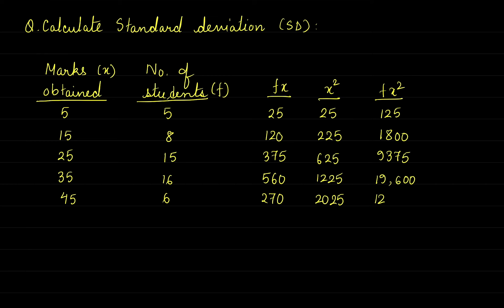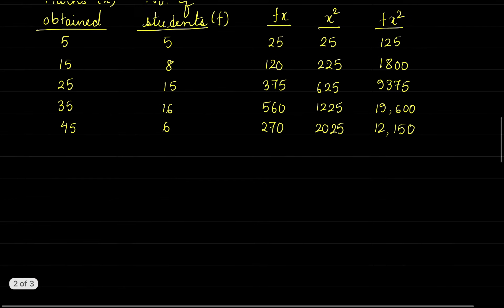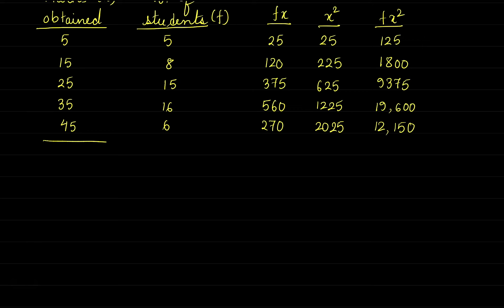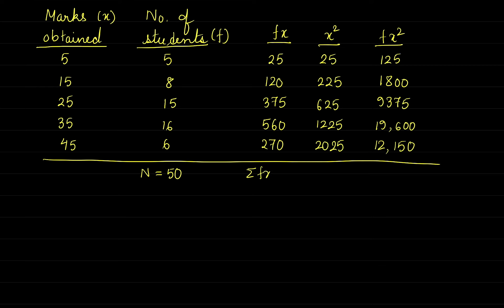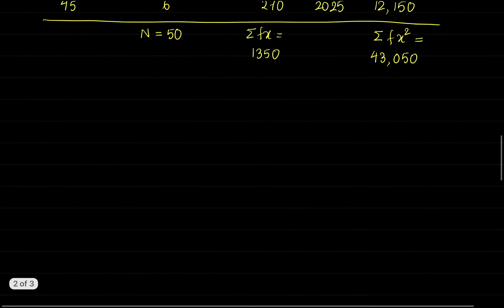Now we need to find the total frequency value, that means total frequency N is equal to 50. Then summation of FX — the value is 1350. Then we need to find summation FX², whose value is 43,050.